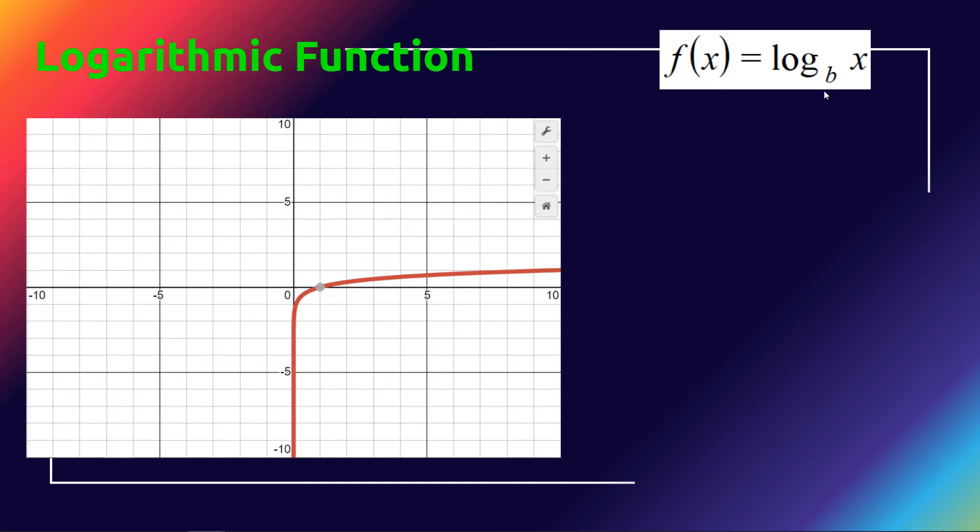A logarithmic function is log base b of x. b, again, is the base—it represents 2, 10, or e. And x is the value you would put in. We will talk about how logarithmic and exponential functions are actually opposites of each other, similar to addition and subtraction or multiplication and division.